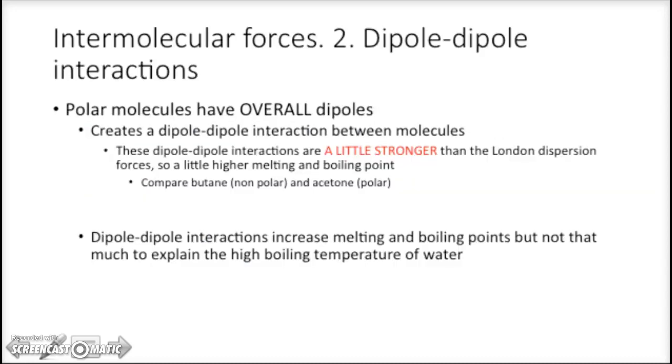Remember from two chapters ago, we can find if a molecule is polar. Draw the Lewis structure, use VSEPR to find the molecular geometry, and let's see if we have an overall dipole moment. Acetone has an overall dipole moment, so it's polar. So that's the dipole-dipole interaction.